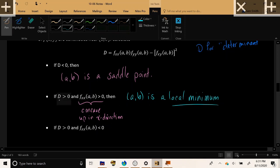Local minimum, the function being concave up in the x direction. But before we even look at fxx, we do need to check, first of all, that the determinant is positive because if it's negative, then we have a saddle point and not a local minimum.